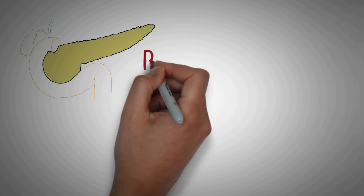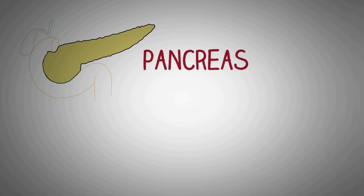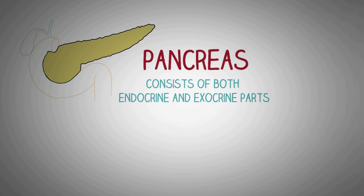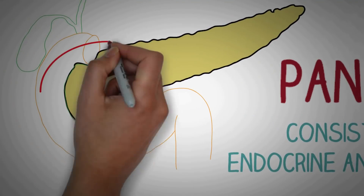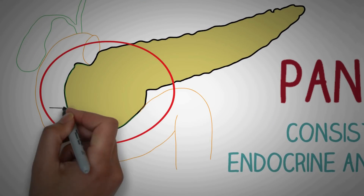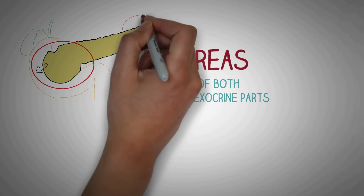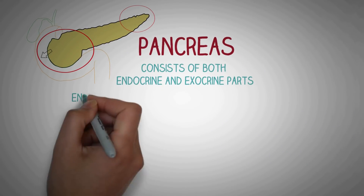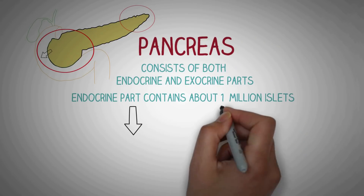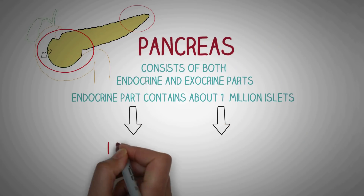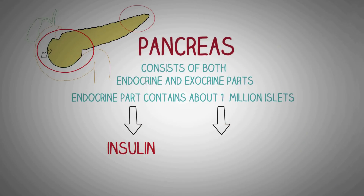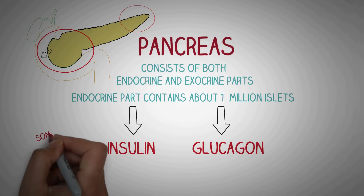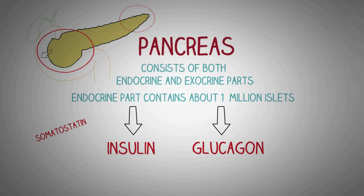The next important organ to discuss in the human endocrine system is the pancreas. The pancreas consists of both an endocrine and an exocrine part. The exocrine part secretes important digestive enzymes into the duodenum, whereas the endocrine part secretes two important hormones: insulin and glucagon. It also secretes somatostatin, which is of lesser importance.